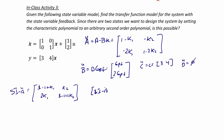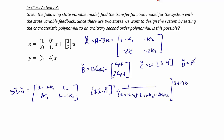(sI minus A-tilde) inverse is equal to 1 over (s minus 1 plus 2K2)(s minus 1 plus K1) minus 2K1·K2, times the adjugate matrix [s minus 1 plus 2K2, negative K2; negative 2K1, s minus 1 plus K1].